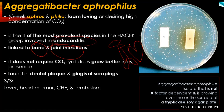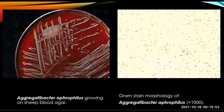This picture portrays an Aggregatibacter aphrophilus isolate that is not X-factor dependent, growing over the entire surface of a TSA plate. It does not depend on the presence of the X factor. We can also observe the growth of Aggregatibacter aphrophilus on sheep blood agar and its gram stain morphology.